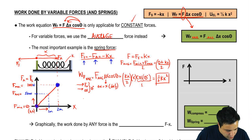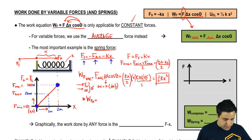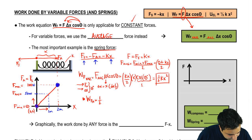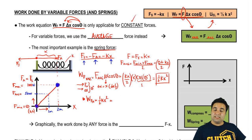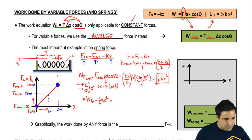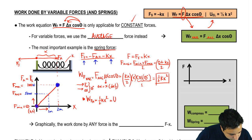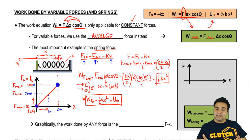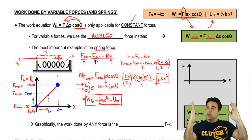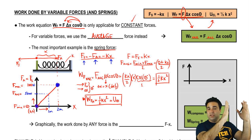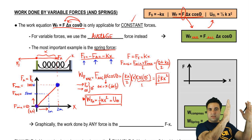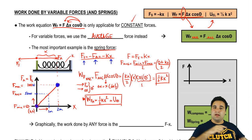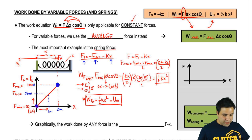So the work done by the applied force compressing the spring is ½kx². Notice that this is exactly the elastic potential energy — U_elastic equals ½kx². This makes sense: a spring that's not compressed has no potential energy. When I compress it, if I put 100 joules of work into the spring, it now has a potential energy of 100 joules. My work goes into elastic potential energy.